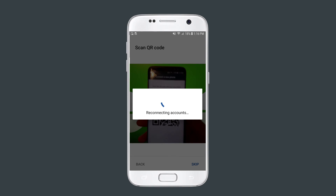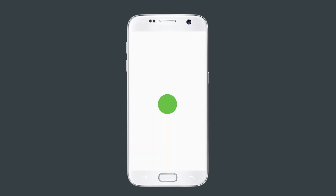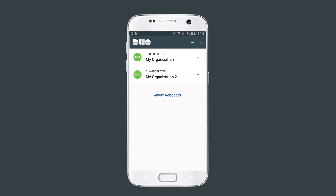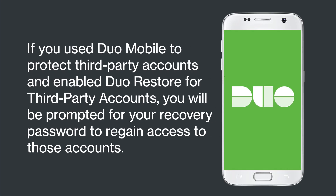Upon completing the restoration, you will see a message indicating that the process was successful and be brought to the account list in the Duo Mobile app. You can now use Duo Mobile to authenticate into protected applications. If you use Duo Mobile to protect third-party accounts and have enabled Duo Restore for third-party accounts, you will be prompted for your recovery password to regain access to those accounts.